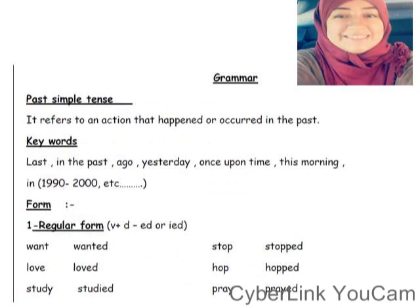Let's move to another part. Grammar — we have here Past Simple Tense. زمن الماضي البسيط. It refers to an action that happened in the past and is finished. The keywords that indicate this tense are: in the past, ago, yesterday, once upon a time, this morning, in 2000, or any old year meaning the event happened.